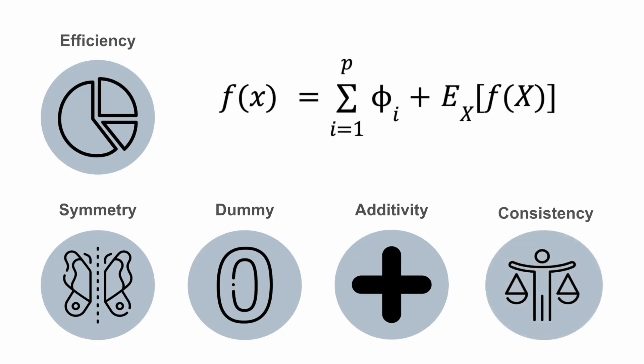For example, in a random forest, all of the decision trees are given an equal weight. There is also a fifth property called consistency, which follows from the previous three. It tells us that if we change a model and the marginal contribution of a feature changes, then the feature's Shapley value will change in the same direction. This means we can reliably compare the Shapley values of different models.